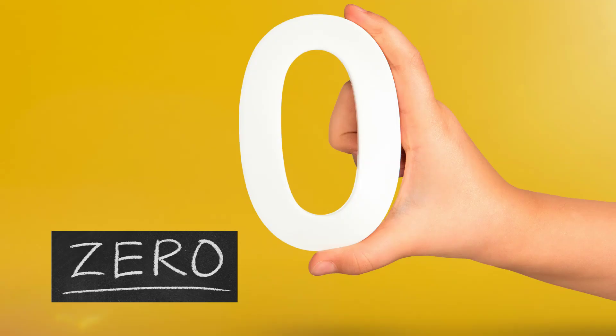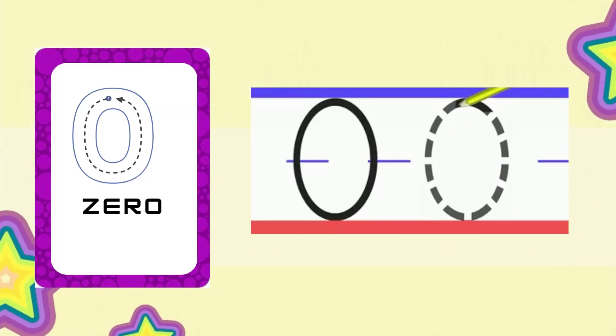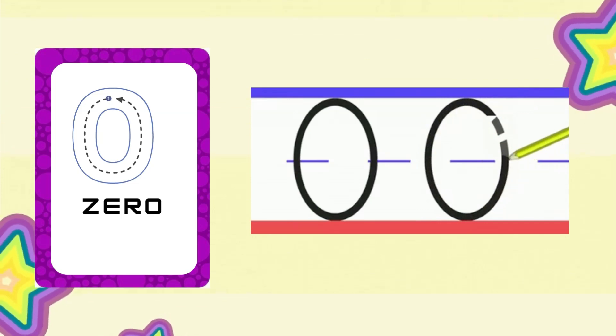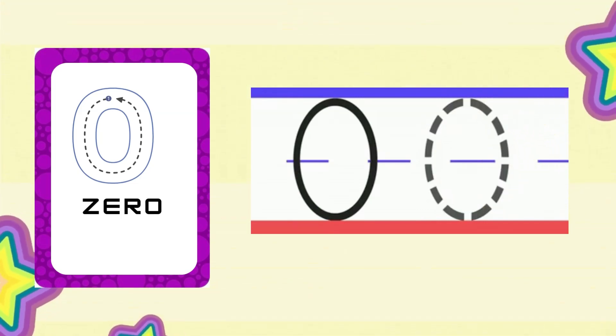Now let's learn to write number 0. Zero means nothing, so no objects to count. To write number 0, we will start at the top and do a circle all the way around.